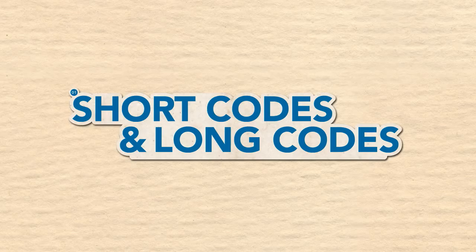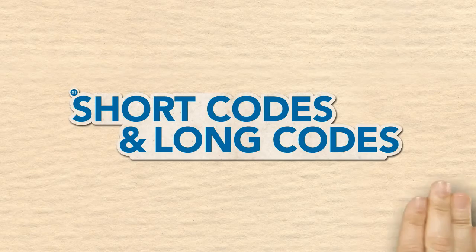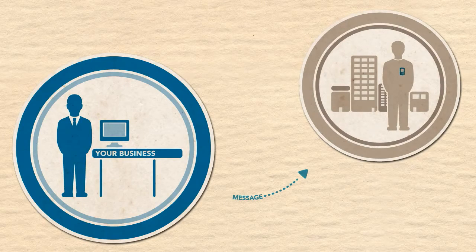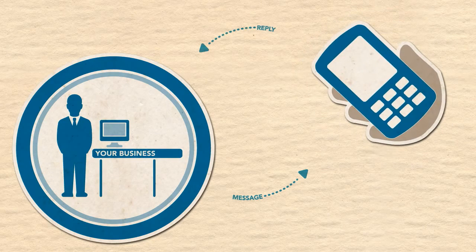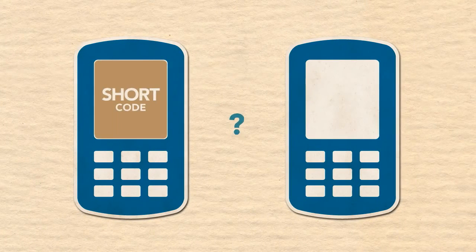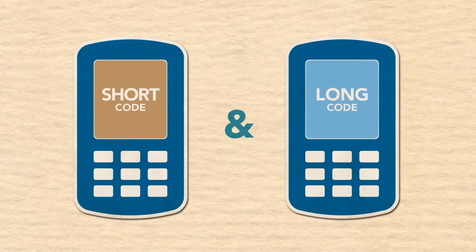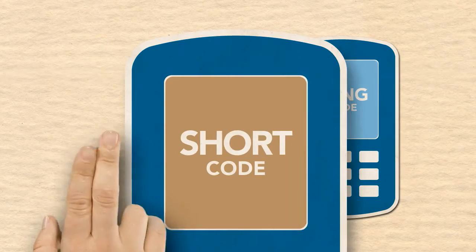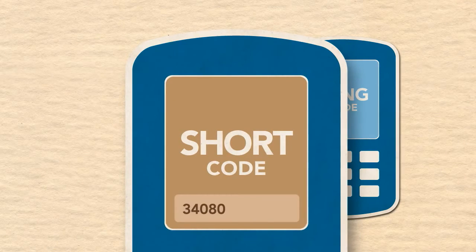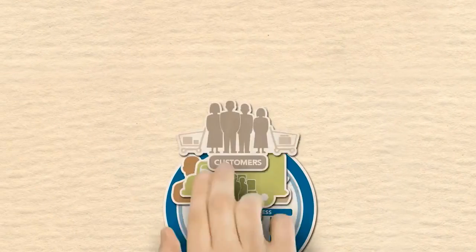Short codes and long codes — another name for them is two-way numbers, because they allow people to reply to your SMS messages. But what is the difference between a short code and a long code? The answer lies in the name: a short code is a memorable number between three and seven digits in length.